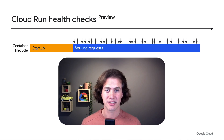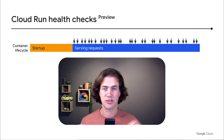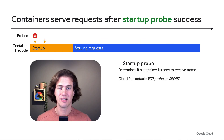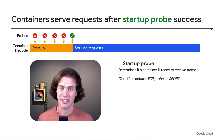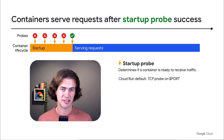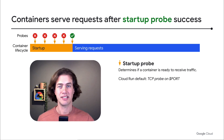So when does a container transition from starting to serving? Today, Cloud Run uses a TCP startup probe. As soon as your container listens on its TCP port, it starts to serve requests.